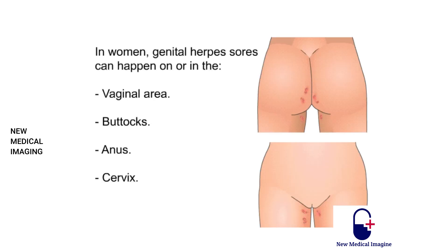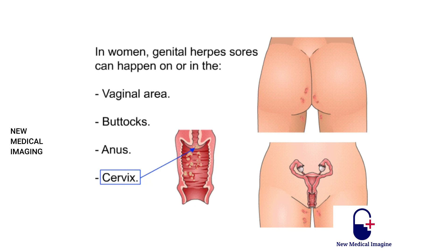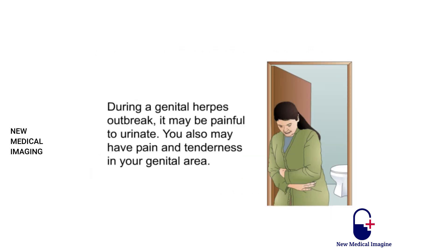In women, genital herpes sores can occur on or in the vaginal area, buttocks, anus, or cervix. In men, sores can appear on the penis, scrotum, buttocks, anus, or thighs, and may also happen inside the urethra — the channel inside the penis leading to the bladder. During an outbreak, it may be painful to urinate, and you may have pain and tenderness in the genital area.